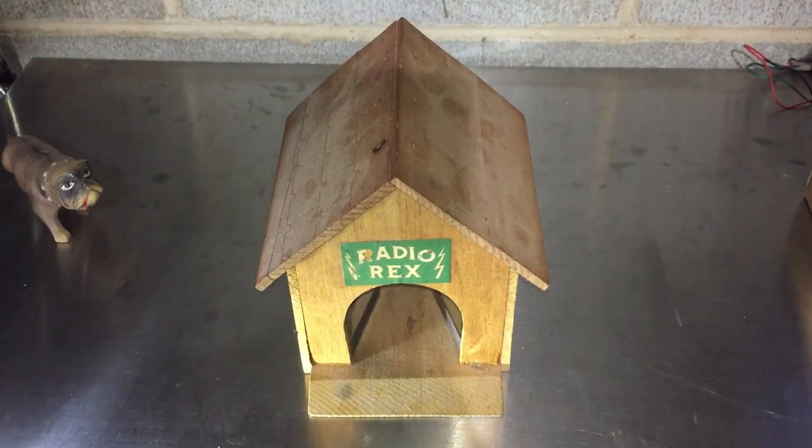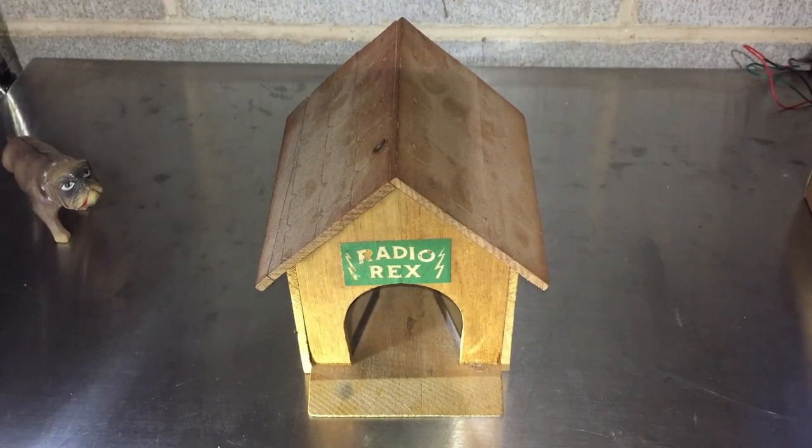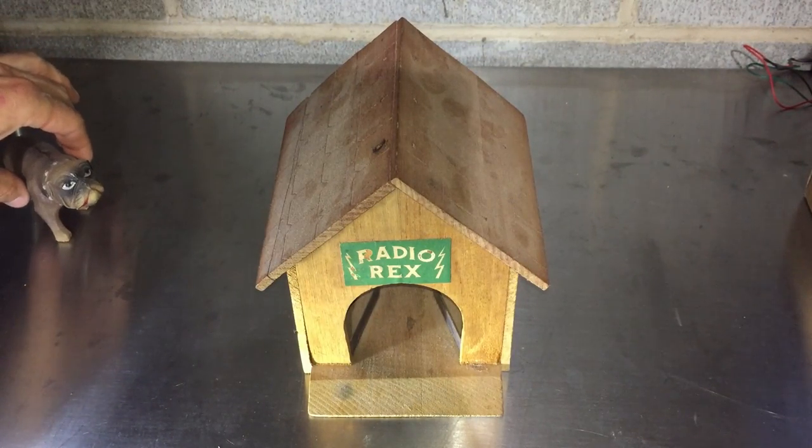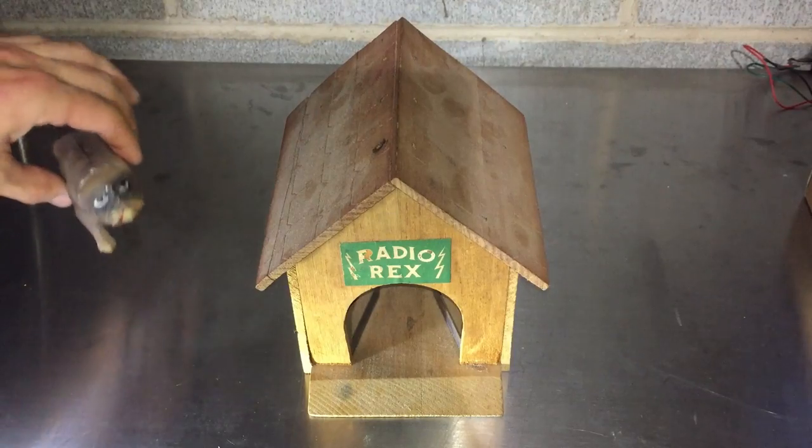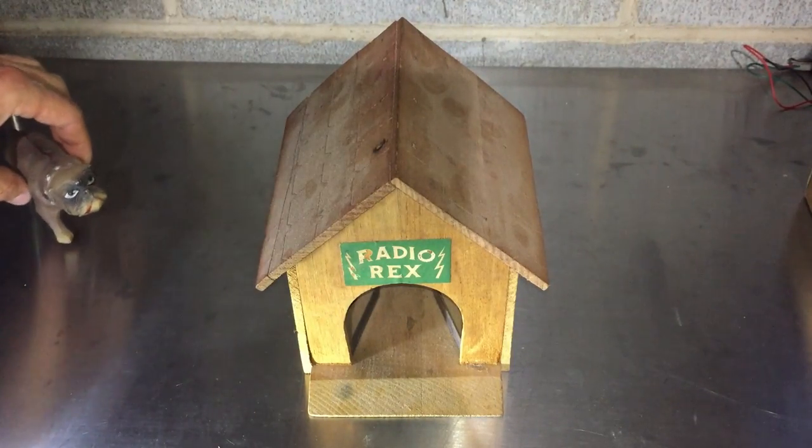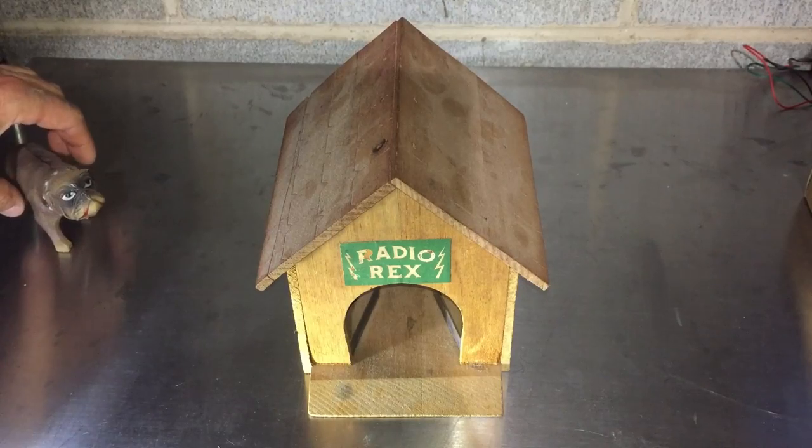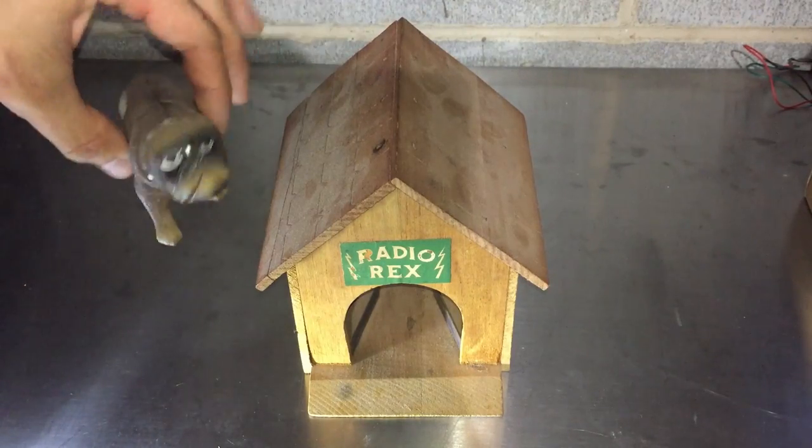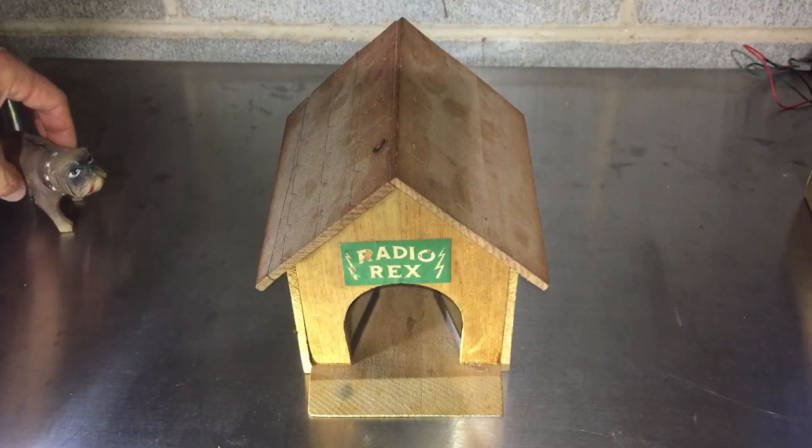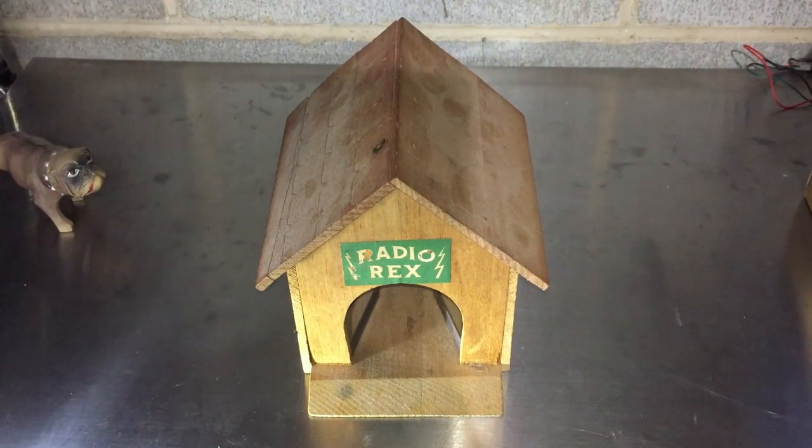Rex only weighs a quarter of an ounce, so he's incredibly light. He's basically two, I want to say injection molded parts, but obviously in the 1910s, early 1920s, injection molding wasn't a thing. So he's basically two pieces glued together. You can see the seam goes all the way down here, so unfortunately I don't really know too much about manufacturing a hundred years ago when it comes to plastics.